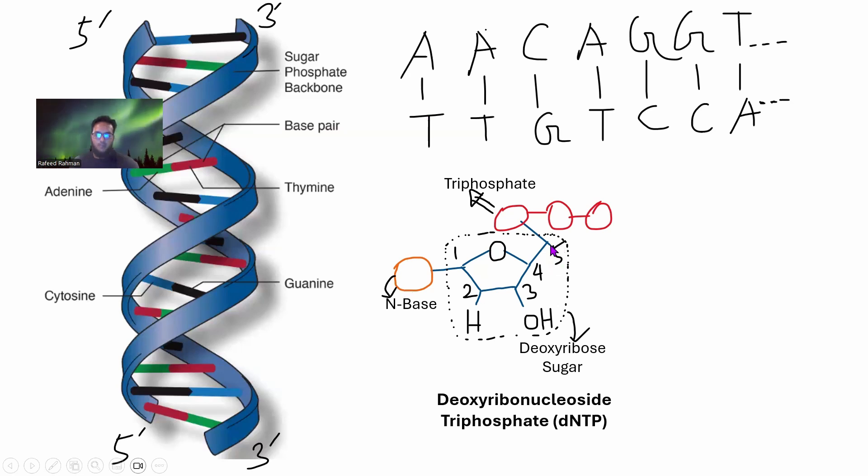In the 5' end, we have this triphosphate - there are these phosphorus atoms. This whole thing is called dNTP. For A it will be dATP, T is dTTP, then dCTP and dGTP.